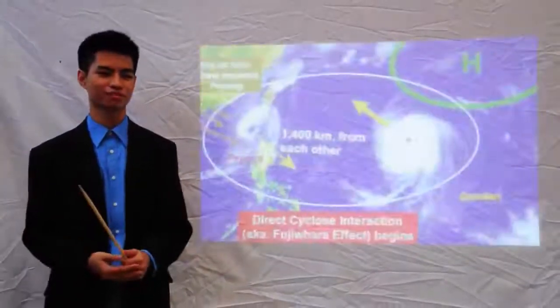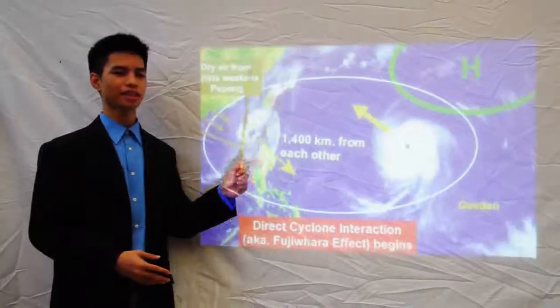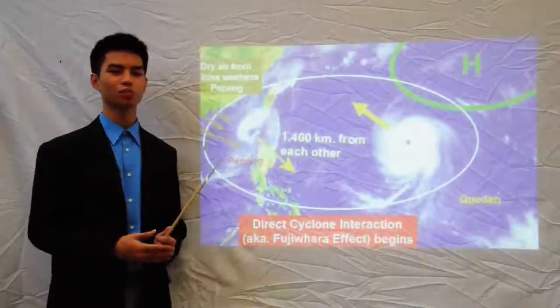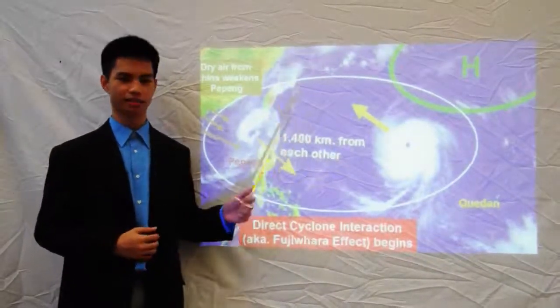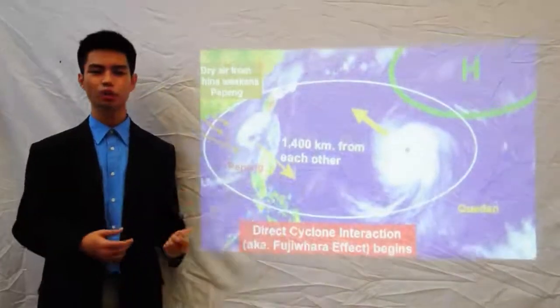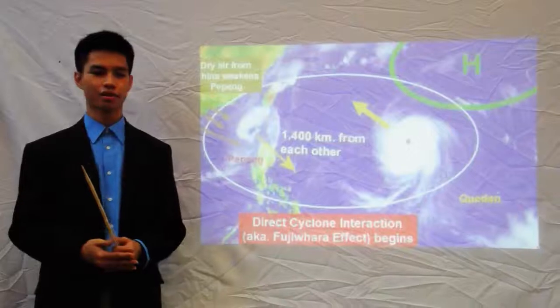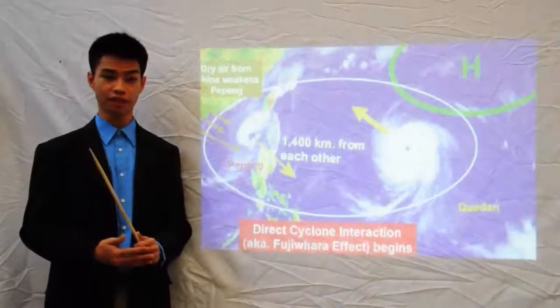Thank you, doctor. Now, due to the Fujiwara Effect, Pepeng will stay in the PAR longer and Kedan will loom closer to the Philippines before making its way to Japan. In Cagayan, Ilocos, Apayaw, it will be very stormy with a 100% chance of rain. Other places in northern Luzon will also experience heavy rains and rough seas.